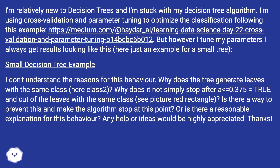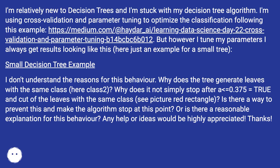I don't understand the reasons for this behavior. Why does the tree generate leaves with the same class — here class 2? Why does it not simply stop after a equals 0.375 equals true, and cut off the leaves with the same class? See picture — red rectangle.